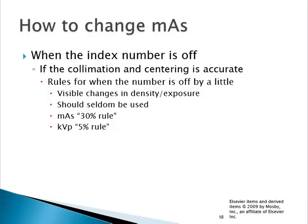There should be a direct correlation between your index number and the technique change needed to correct under or overexposure. Some systems use different number systems to represent ideal exposure — for example, if your ideal is 2 and you got 4, you'd need to reduce mass to bring the index number down. In some systems you may need to increase mass to bring your number down; in others, decrease mass to bring the number up. Some systems are exactly opposite. Know your equipment.